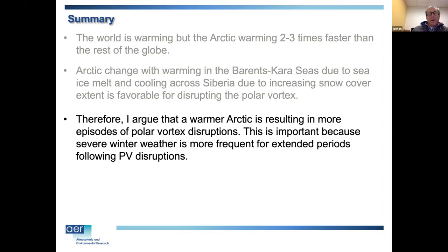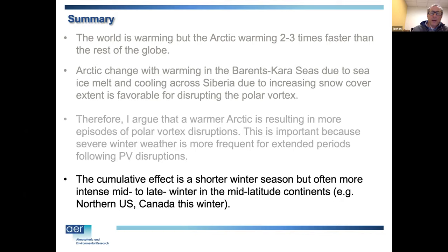I would argue that this amplified Arctic warming is resulting in more episodes of polar vortex disruptions. We have a statistical relationship: when you have polar vortex disruptions, the probability of severe winter weather is increased. Maybe we're getting a cumulative effect — a shorter winter season overall, but often following these polar vortex disruptions we see more intense mid-to-late winter episodes.